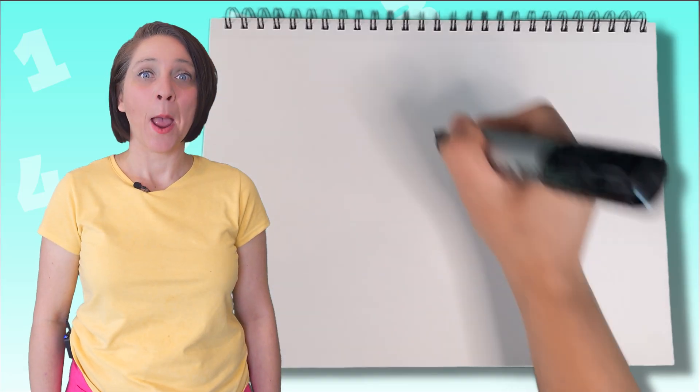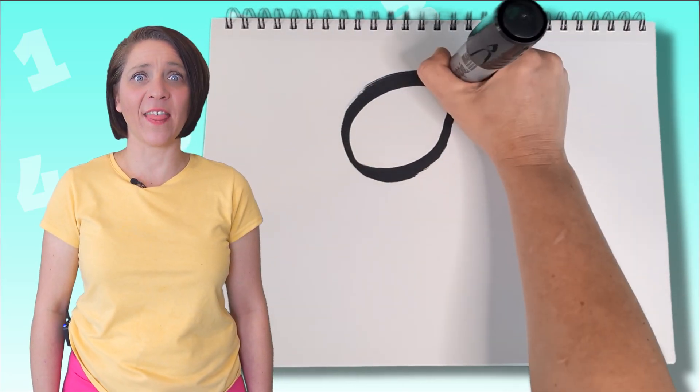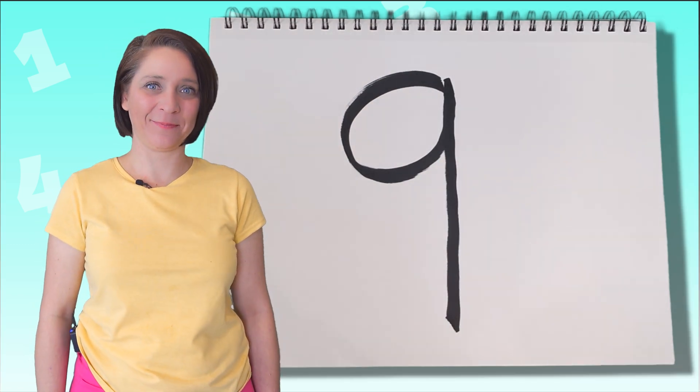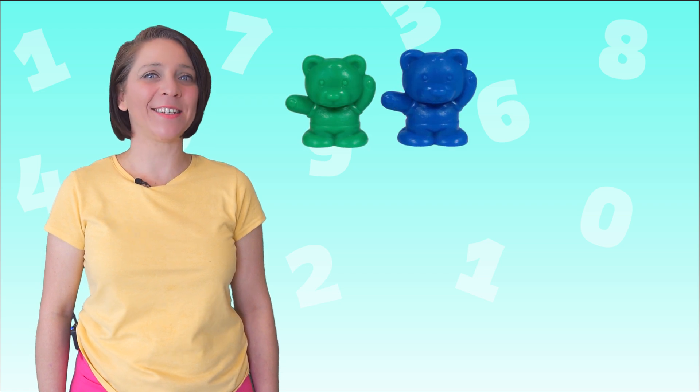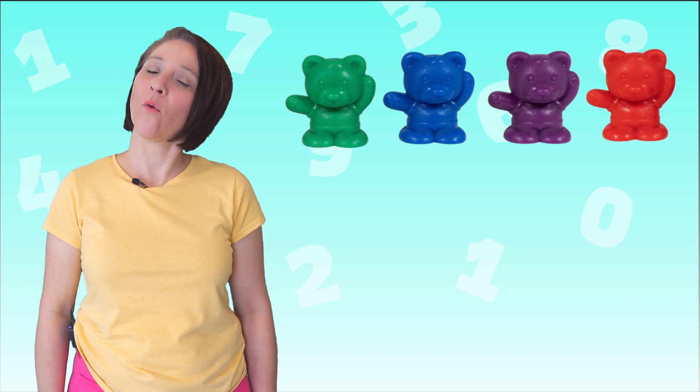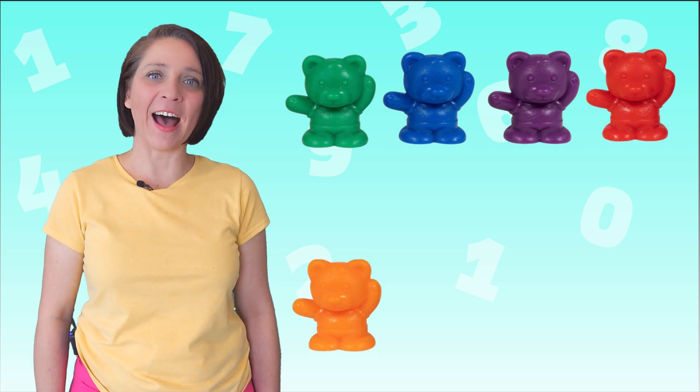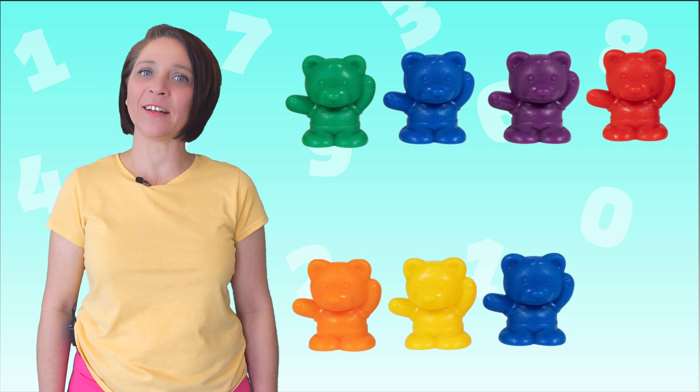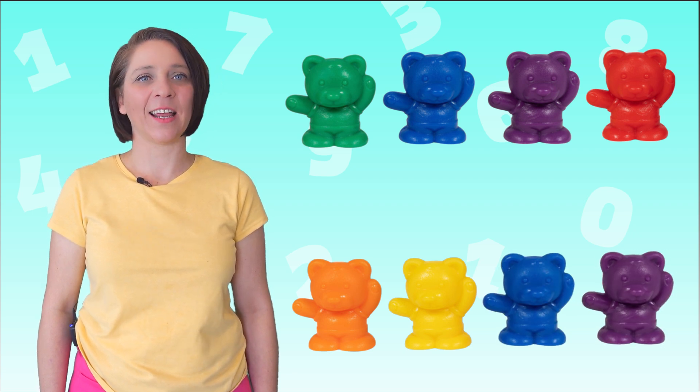We're almost there! What number comes after eight? Yeah! Number nine. Make a circle and then a line. That's the way to make a nine. One, two, three, four, five, six, seven, eight, nine.